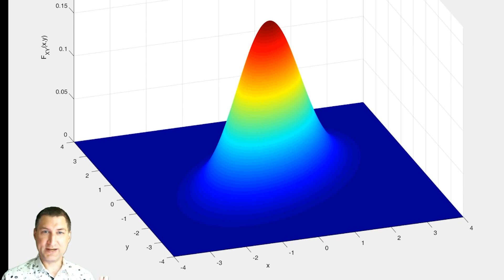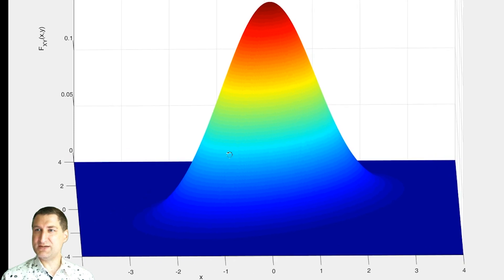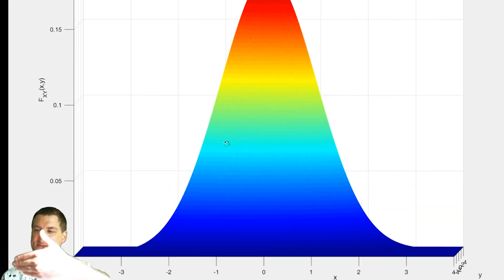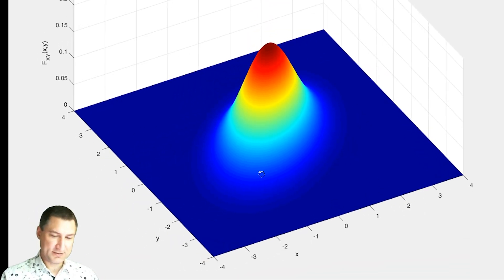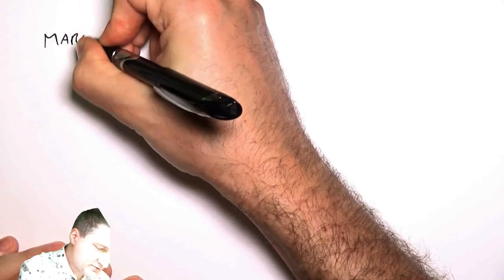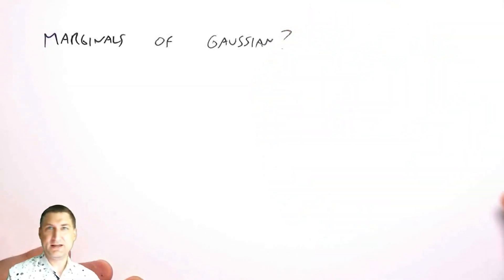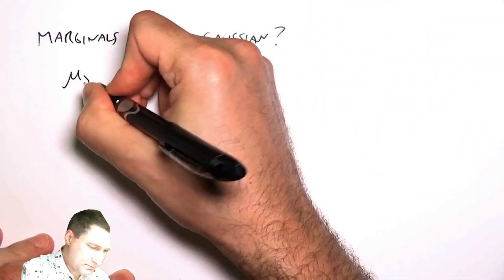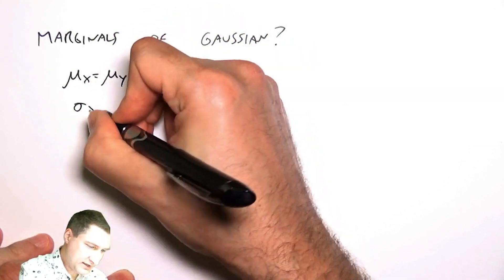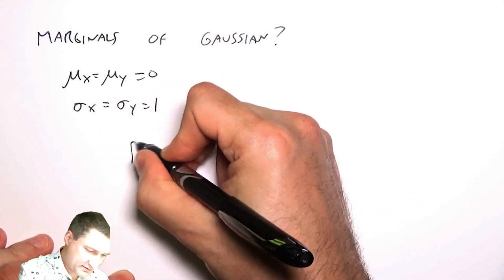One thing to think about is what would happen if I took the marginals. I can immediately see what the marginals are when rho equals 0, and even when rho is not 0, it looks like pushing the PDF onto the x-axis gives something Gaussian. Let me think about what the marginals of the Gaussian are, making life easier by assuming means are 0, sigmas are equal to 1, and rho is arbitrary.